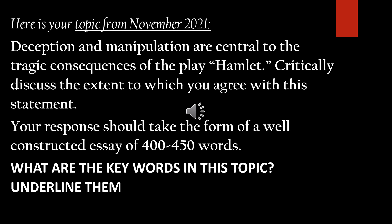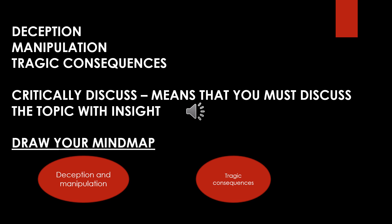Here is a topic from the November 2021 national paper: 'Deception and manipulation are central to the tragic consequences in the play Hamlet. Critically discuss the extent to which you agree with this statement. Your response should take the form of a well-constructed essay of 400 to 450 words.' To start with, look for the key words in the topic and underline them. The key words are: deception, manipulation, tragic consequences, and critically discuss — which means discuss the topic with insight.